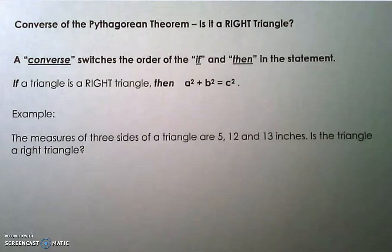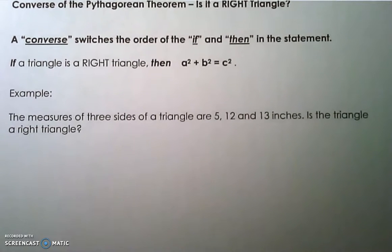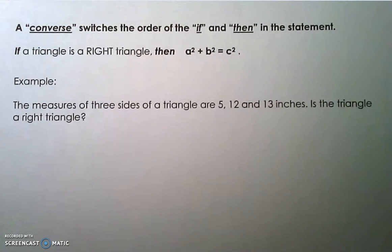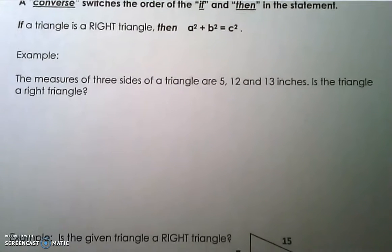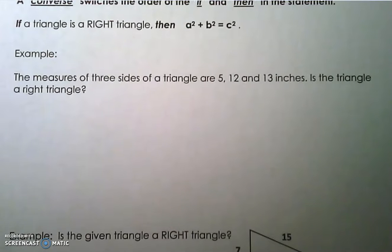We're going to jump into some examples of applying the converse. If the given measures are 5, 12, and 13, would the triangle be a right triangle? We're going to test this, plug these numbers into Pythagorean theorem and see if it works.